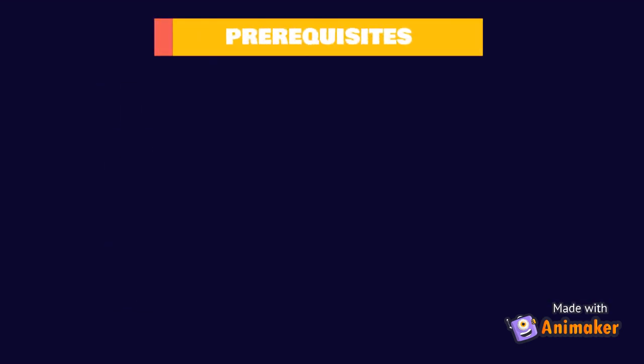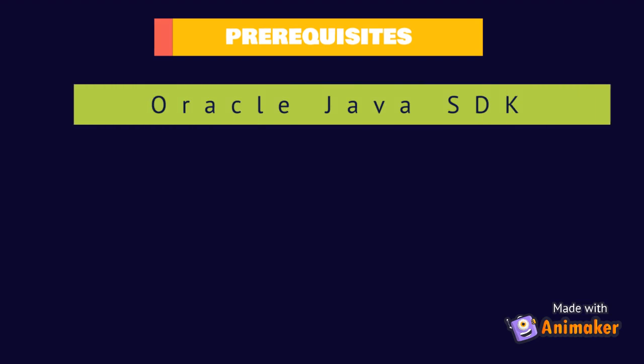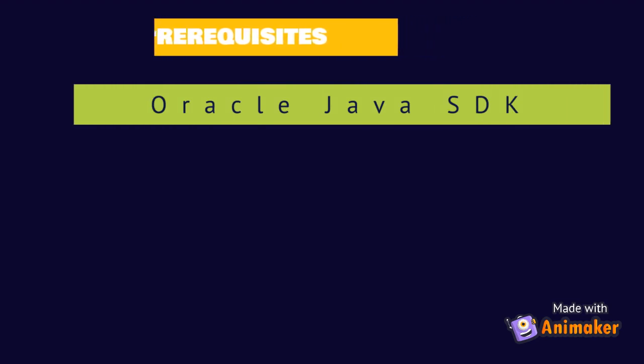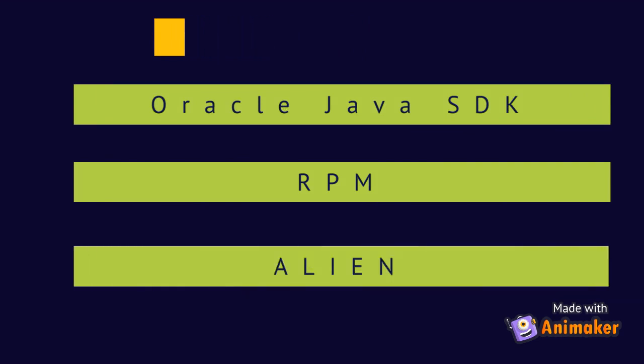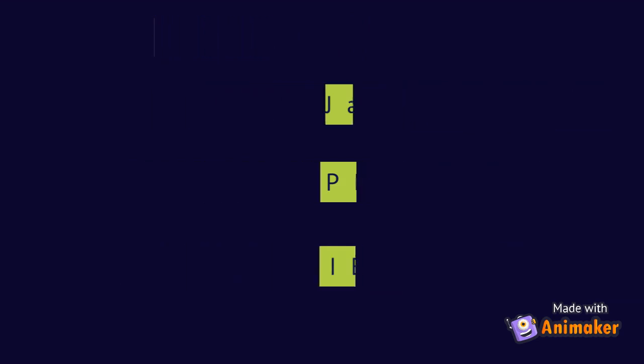Before we start, it is mandatory that we check if we have installed the following prerequisites. Step 1: Oracle Java SDK is important for running Oracle applications. Step 2: RPM and Alien library are also important for installing the Oracle SQL+ package.